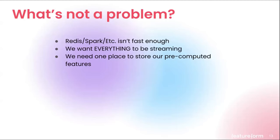Things we don't solve: we're not trying to build a better Redis or a better Spark — we don't view that as the problem. We're not trying to make everything streaming. I also view the name 'feature store' as a misnomer. Every cloud has a feature store, but if you think of it as just a place to store features, that's missing the point. In practice, we don't think the problem that needs to be solved is a new type of database to store features.